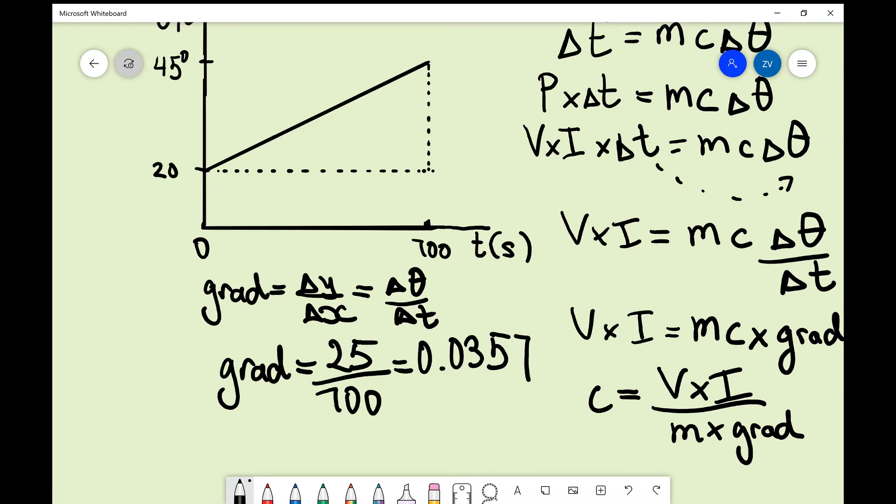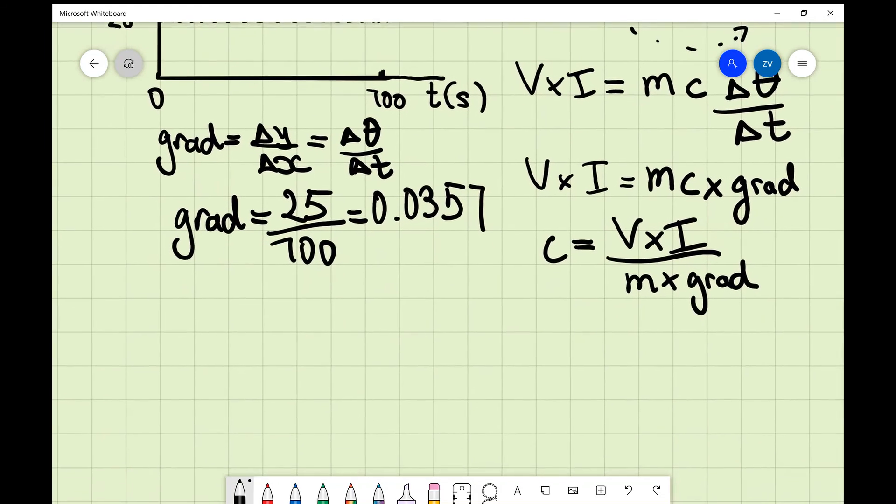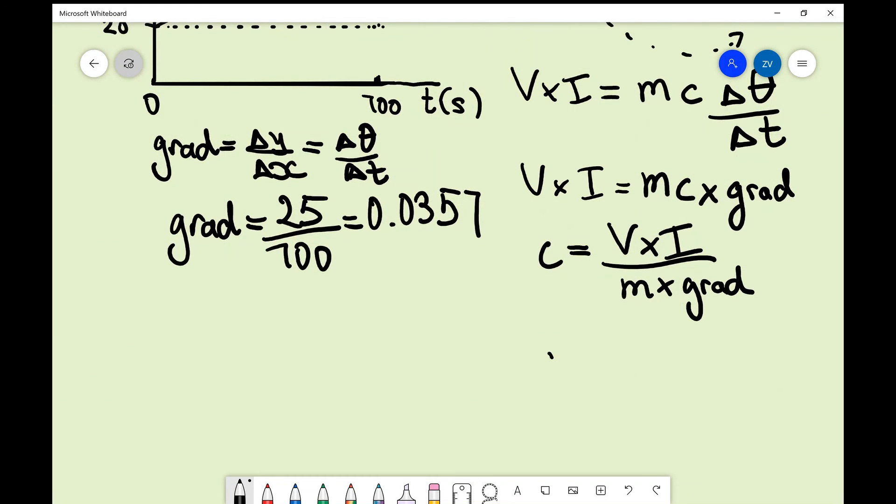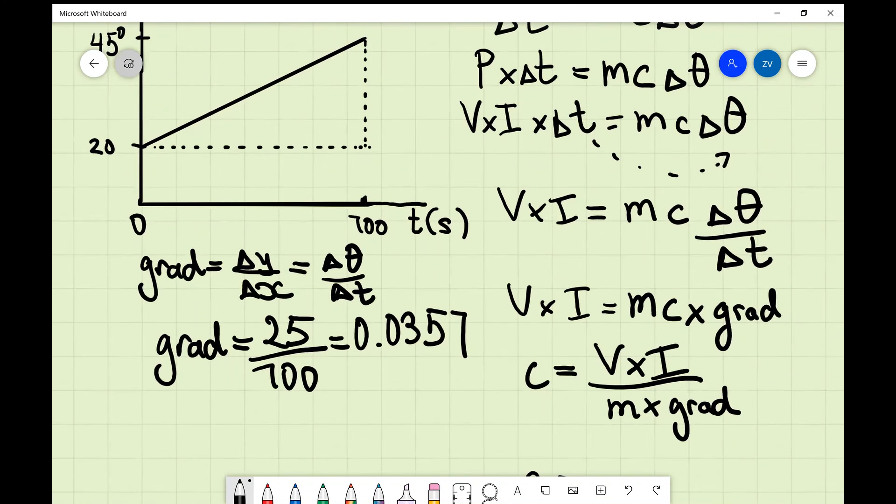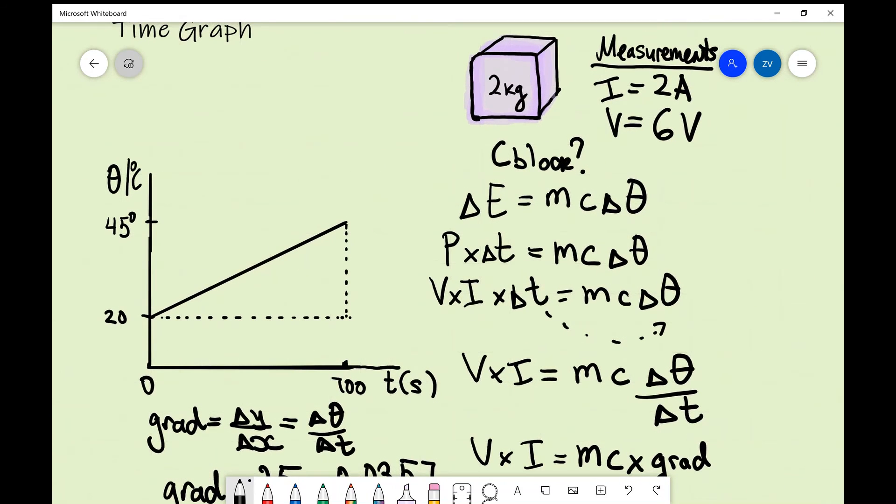Well we can start plugging in some numbers for calculating the specific heat capacity. So c is going to be V times I. Now if you remember at the start of the question, I gave you some values for V and I. So V is 6 and I is equal to 2.